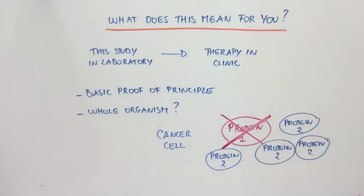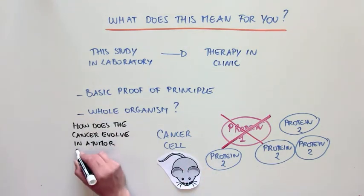If the cancer cells do this, the anylase inhibitor treatment may not be as effective in killing the cancer cells. So next, it will be crucial to test this in a whole organism, such as the mouse, to see how the cancers evolve in a tumor environment.